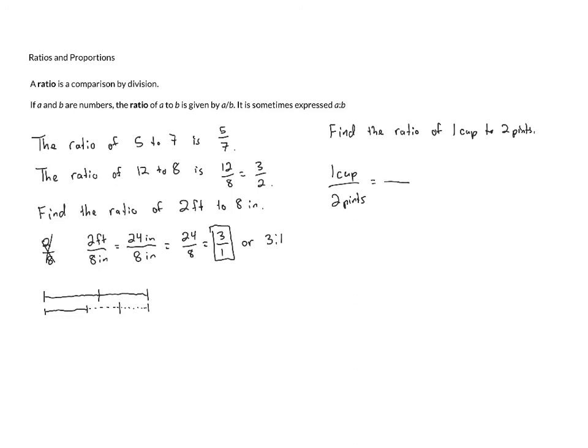So if each pint is equal to 2 cups, and we've got 2 pints, that's going to be equal to 4 cups. So when we convert to cups, this ratio becomes 1 cup to 4 cups, or 1 cup over 4 cups. And once they have the same unit, we can get rid of the units. And so this ratio becomes 1 fourth,